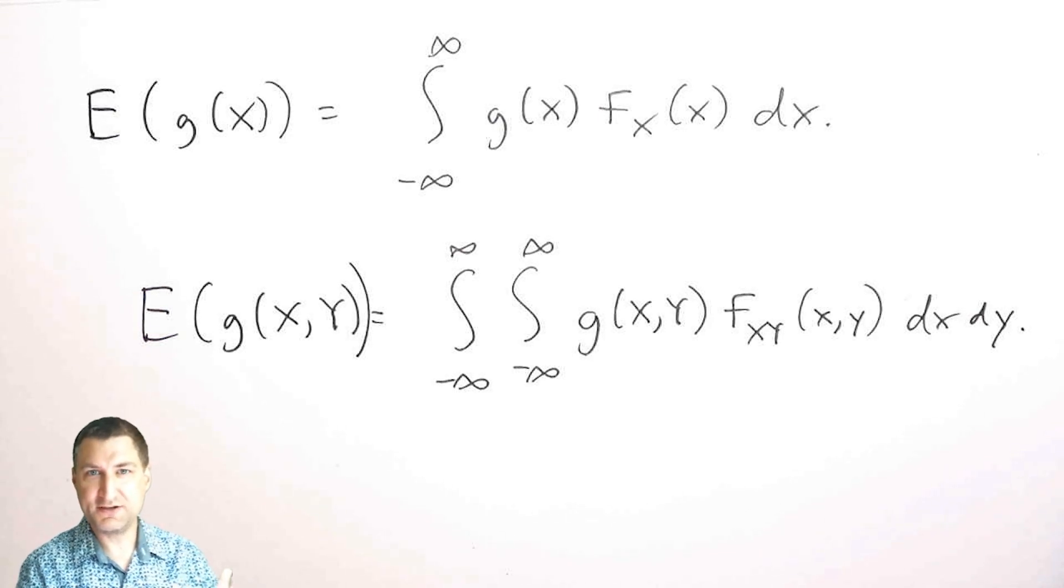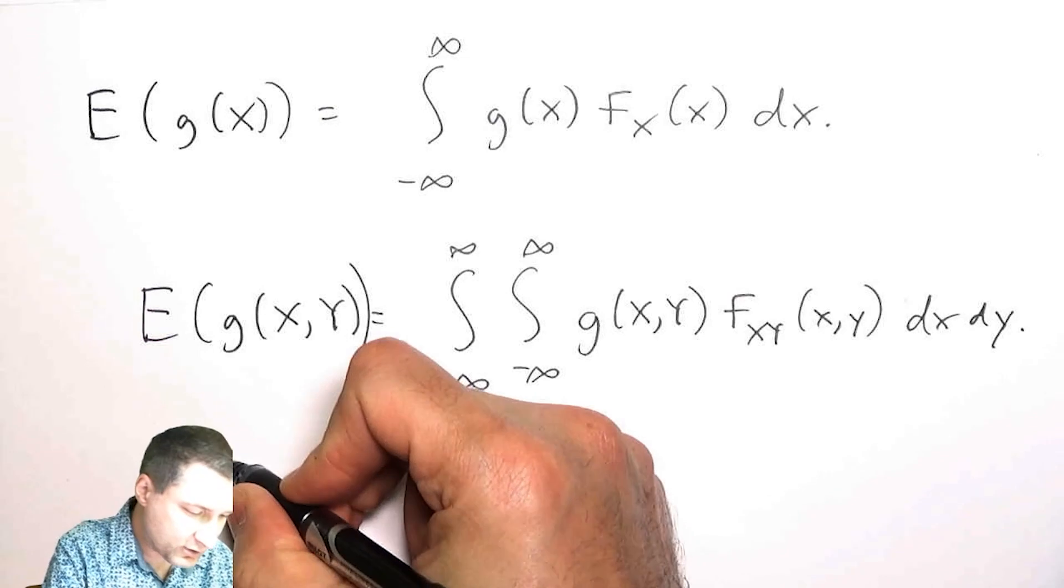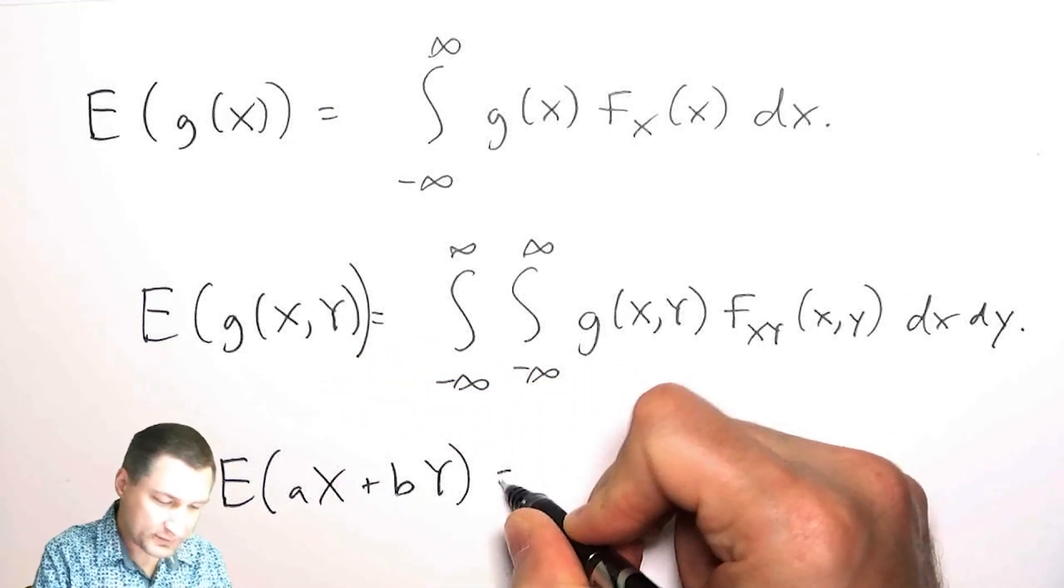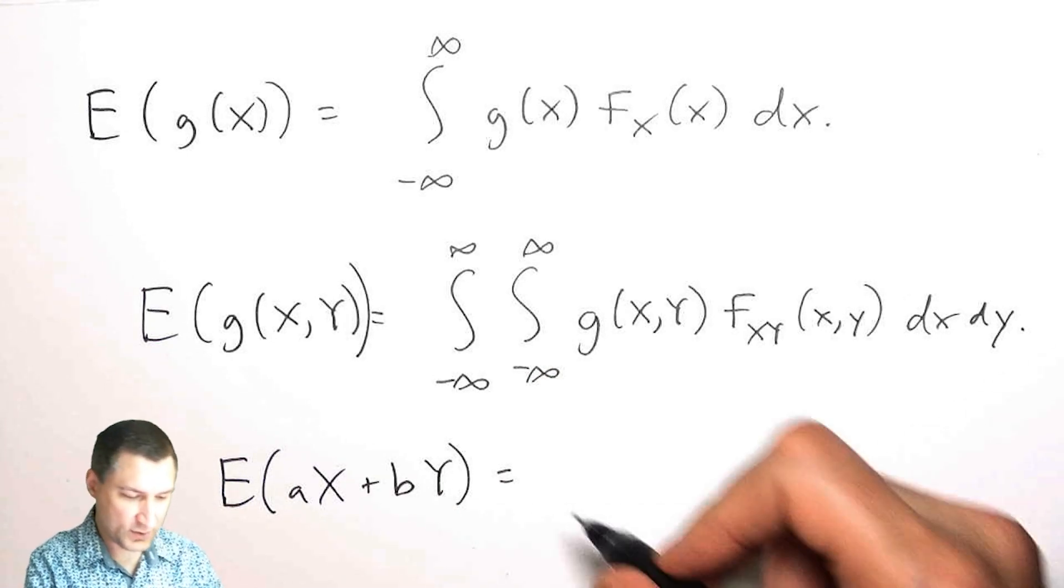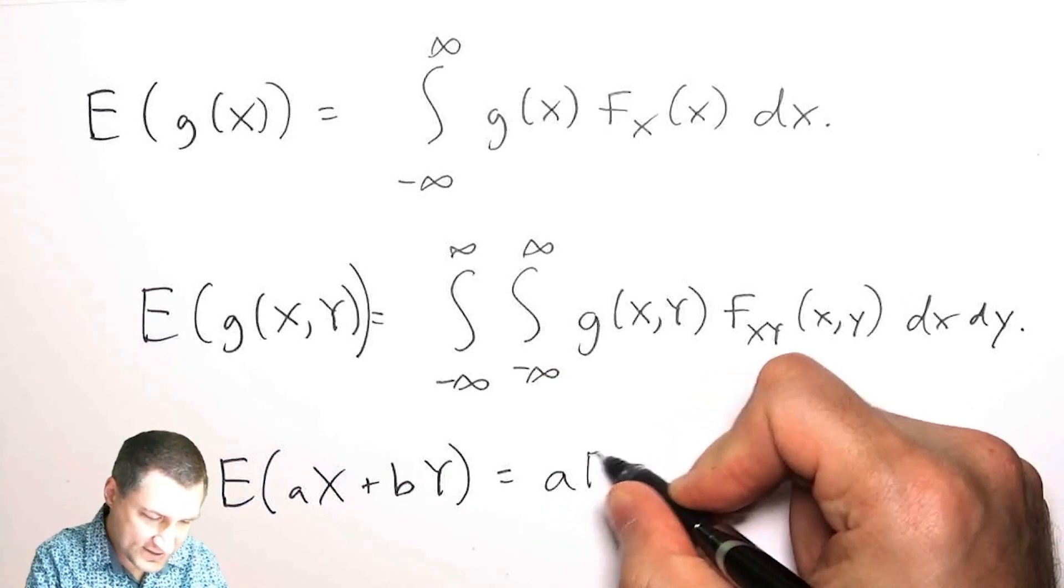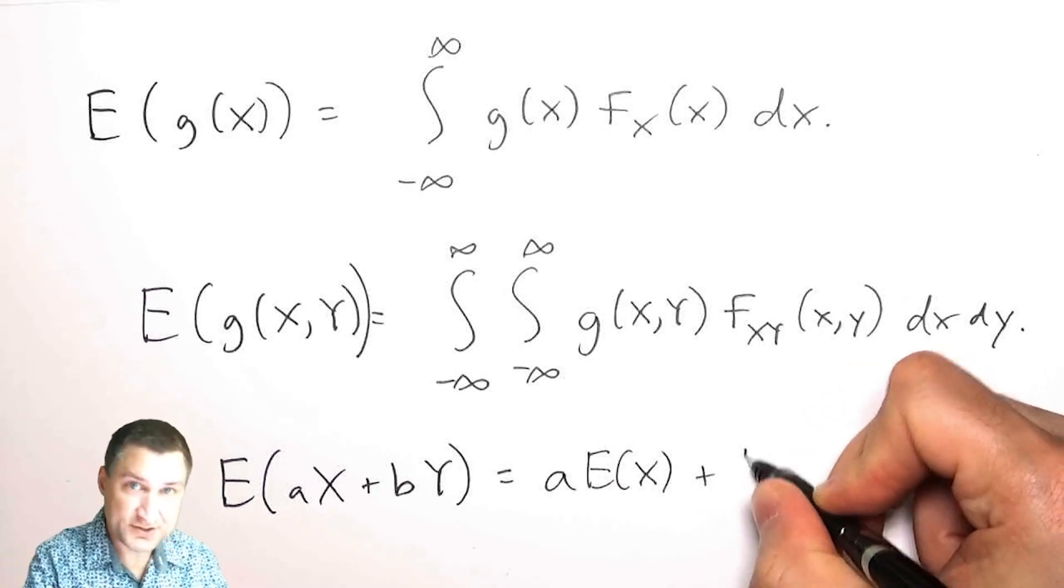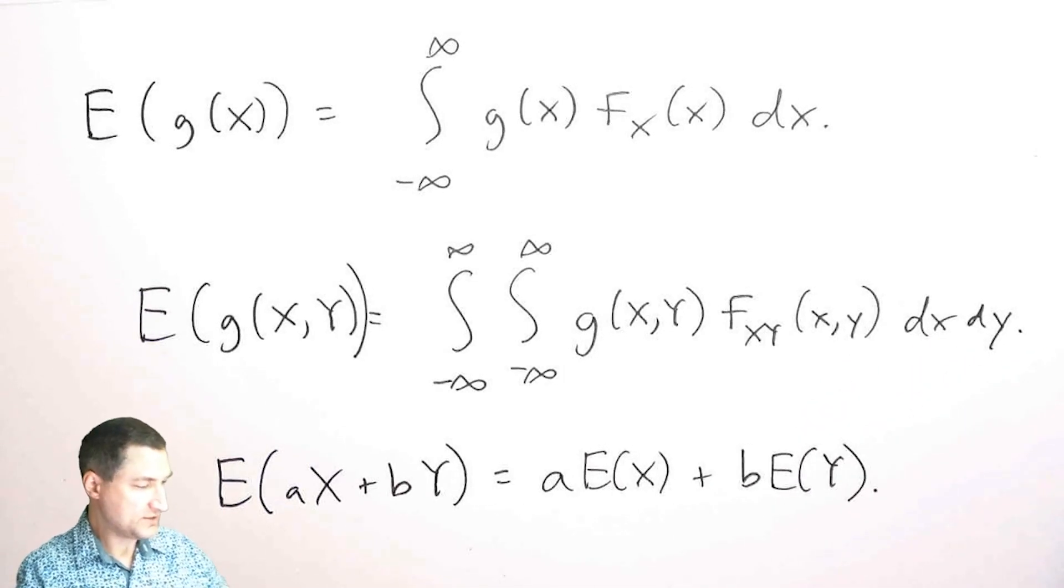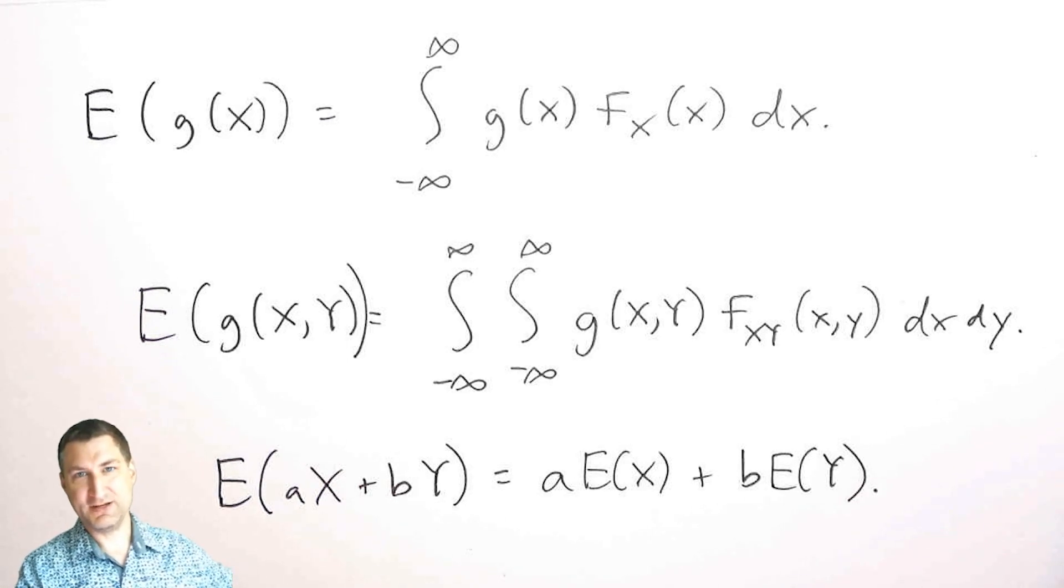One thing that makes life easier is that for specific functions, I don't have to do a lot of work. I know already from the fact that the expected value is linear, that if I have some linear function of X and Y, this is just A times the expected value of X plus B times the expected value of Y. So that makes life a little bit easier.